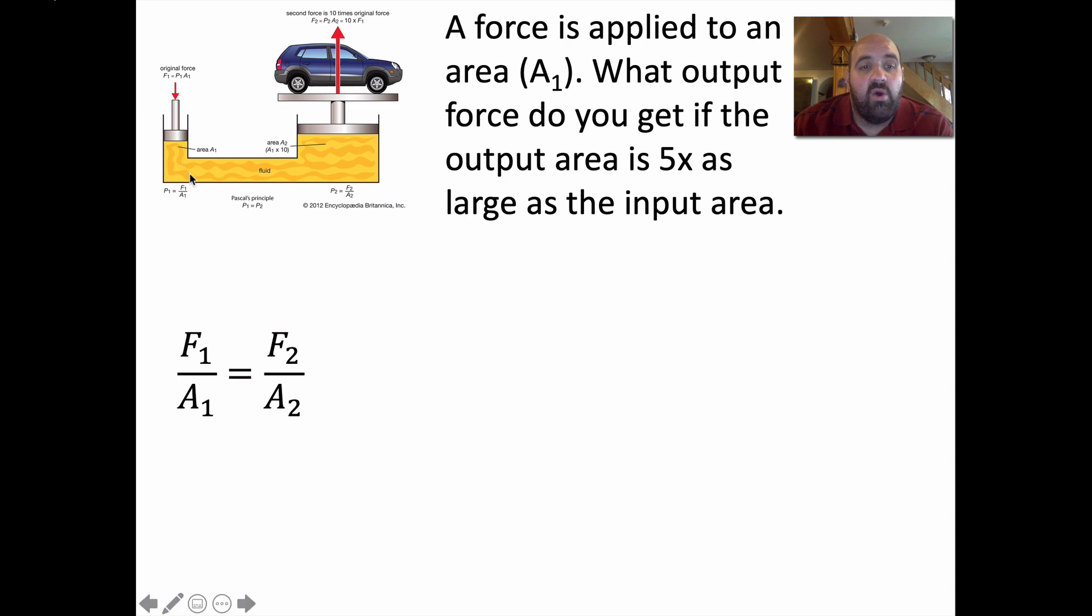Well, we know and we love this equation. F₁ over A₁ equals F₂ over A₂. Basically, input pressure equals output pressure. And we also know that A₂ is equal to 5A₁. They tell us that the output area is 5 times as large as input. So A₂ is 5 times A₁.